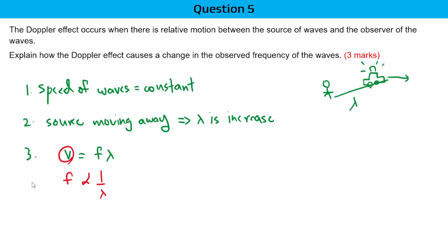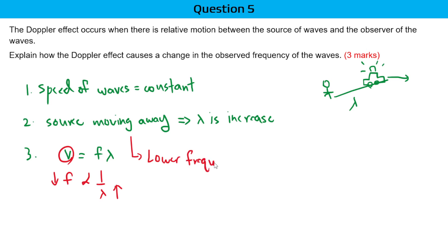When your lambda is increasing, your frequency is going to decrease. Meaning that when the source is moving away, it will give you a lower frequency. And that's how you can score three marks for answering about the Doppler effect.